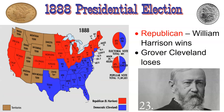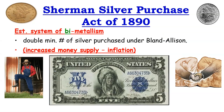Democrats supported the lower tariff, and that's something Cleveland won on. He serves out his four years, and in 1888 Republican William Henry Harrison wins, defeating Grover Cleveland's second attempt at a term in office. But Cleveland will come back.